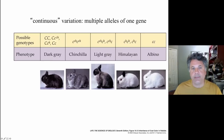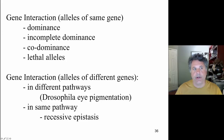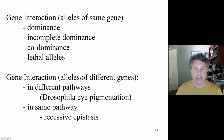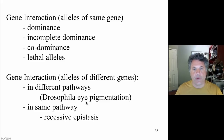Now I'd like to move on to look at other apparent but not real exceptions to Mendelian inheritance. We're going to look at gene interaction — alleles of the same gene that interact — and then we'll look at alleles of different genes that interact in a phenomenon we call epistasis. That's where we're going in the next part of this lecture.